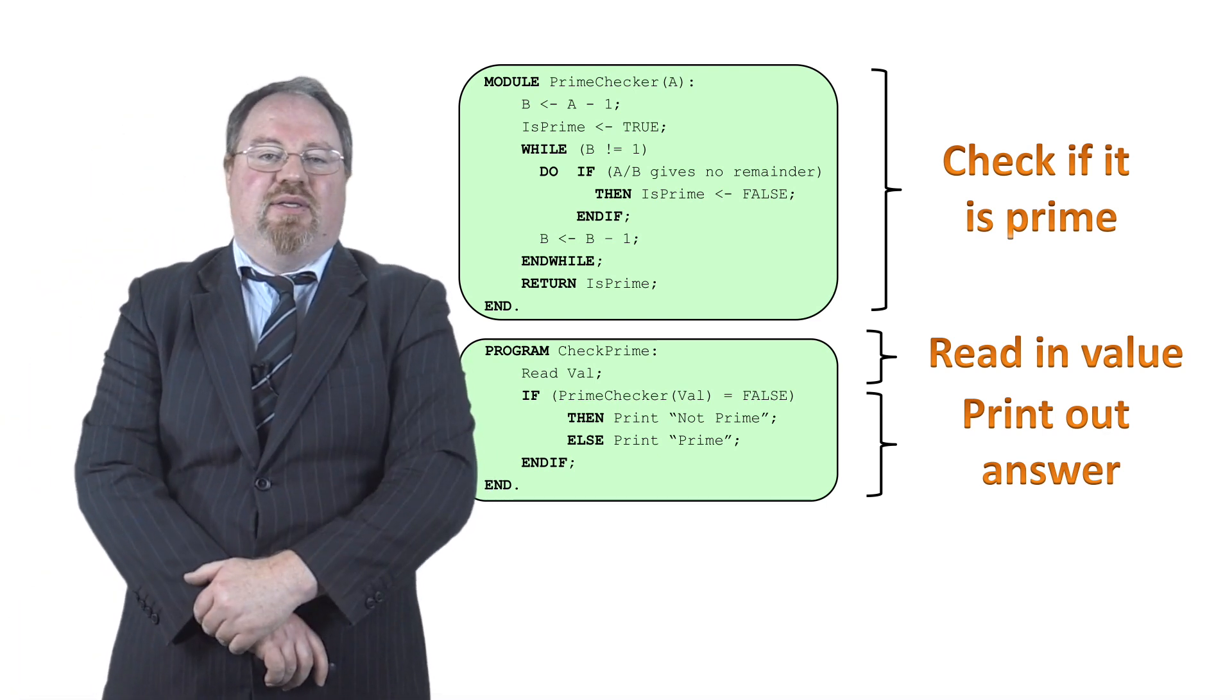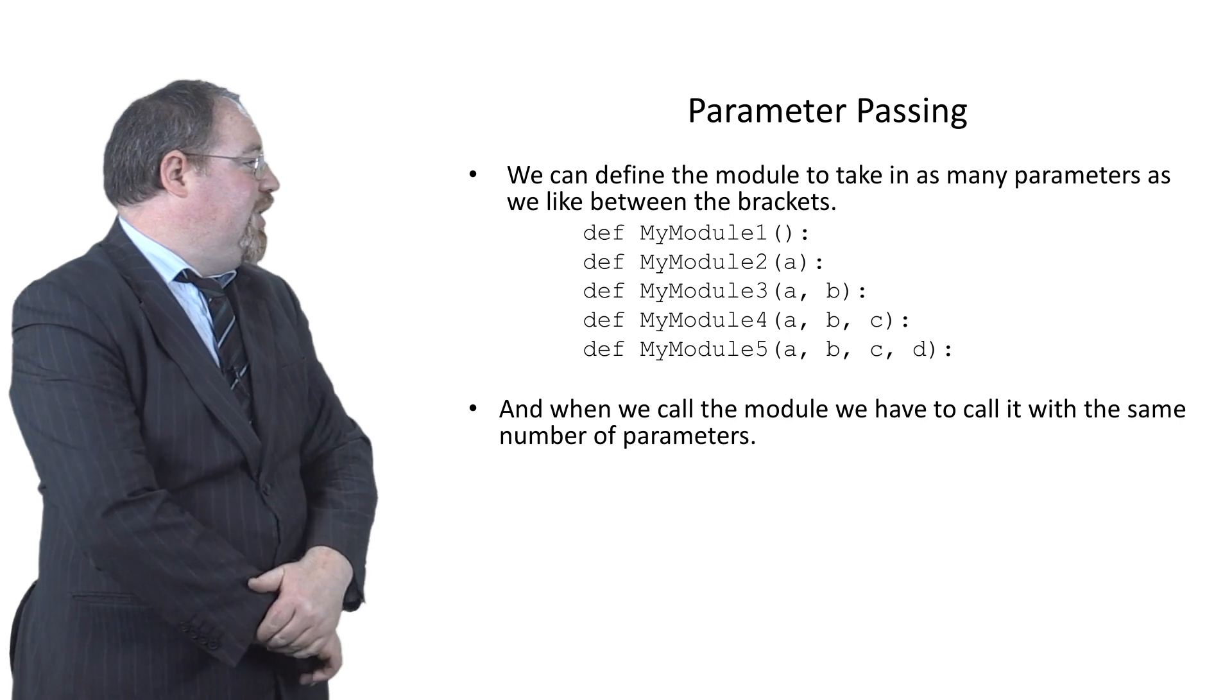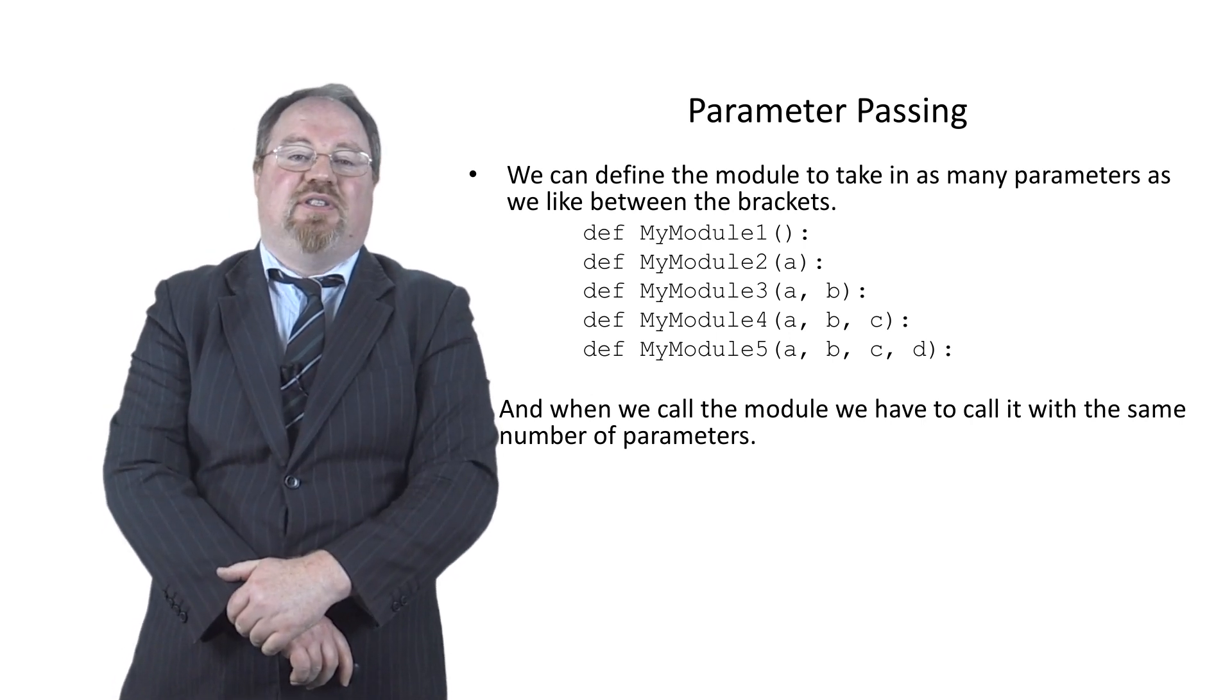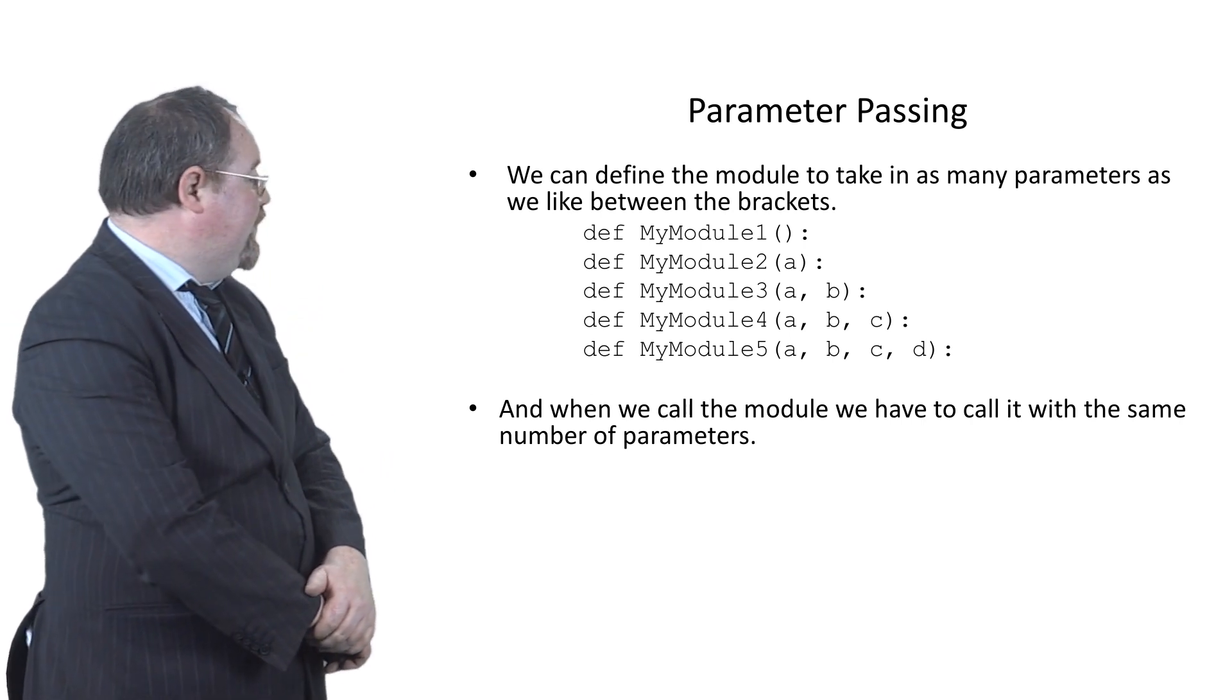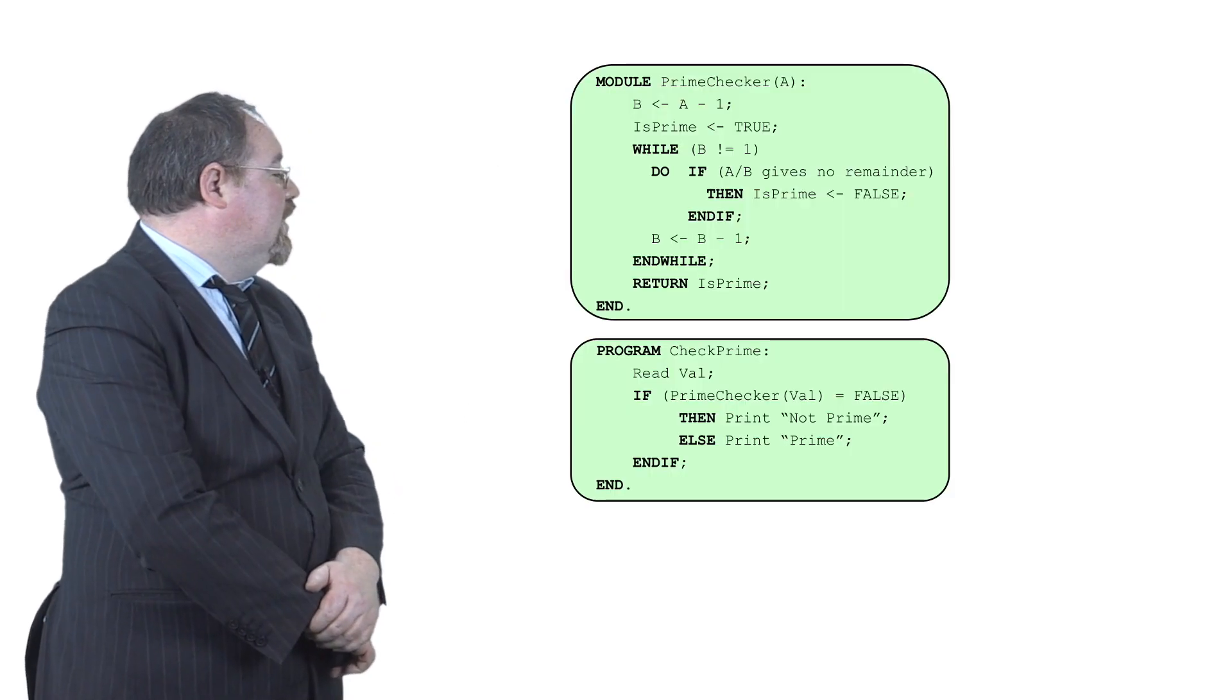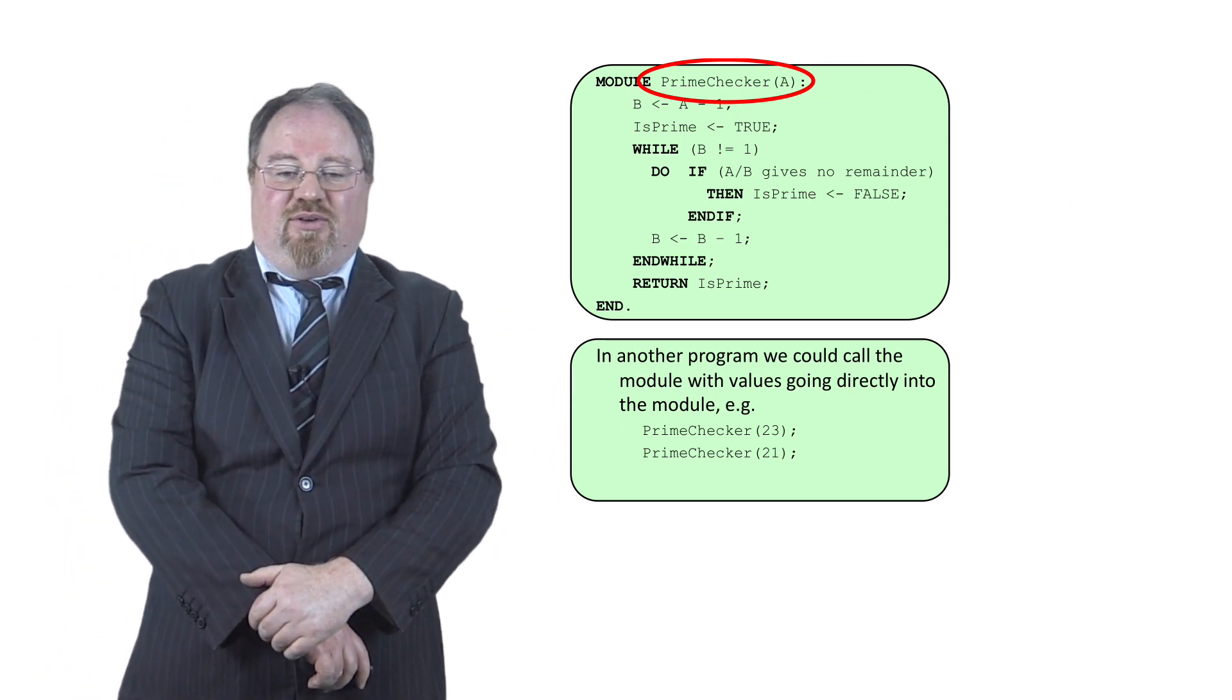When I call a method, I can call it with no parameters, with one parameter, with two parameters. And I simply just give the parameter names separated by commas within the brackets. The number of parameters I call a method with, I have to define the method to accept those number of parameters. They have to match in terms of the code. So if I call prime checker with value, then that can be read in as A or B or value or any variable name at all.